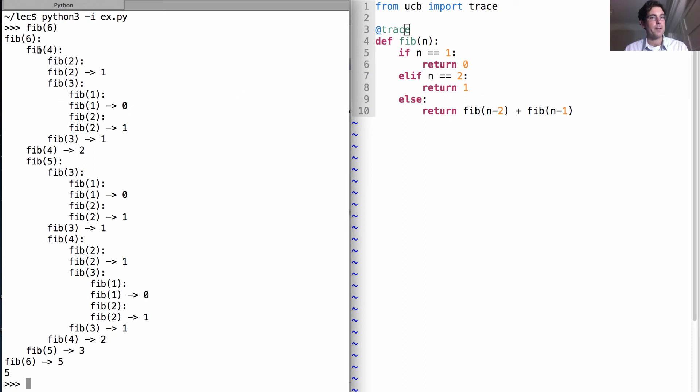So fib(6) calls fib(4), which calls fib(2), which returns 1. Also calls fib(3), which calls fib(1), which returns 0. And fib(2) returns 1. Finally, fib(3) returns 1. And etc.